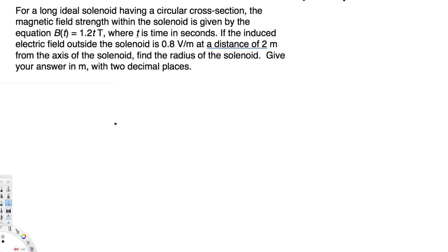What's going on guys, let's look at this problem right here. This question is asking for a long ideal solenoid having a circular cross-section. The magnetic field strength within the solenoid is given by equation B(t) equals 1.2T, where t is time in seconds. If the induced electric field outside the solenoid is 0.8 volts per meter at a distance of 2 meters from the axis of the solenoid, find the radius of the solenoid.